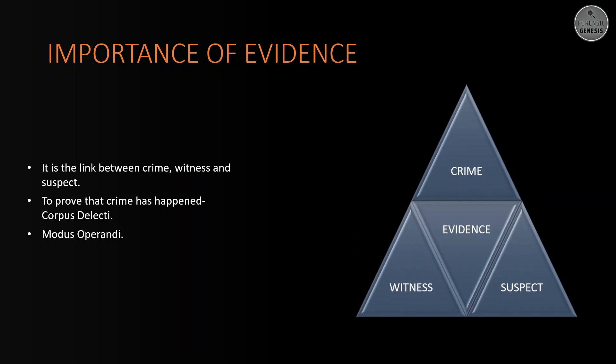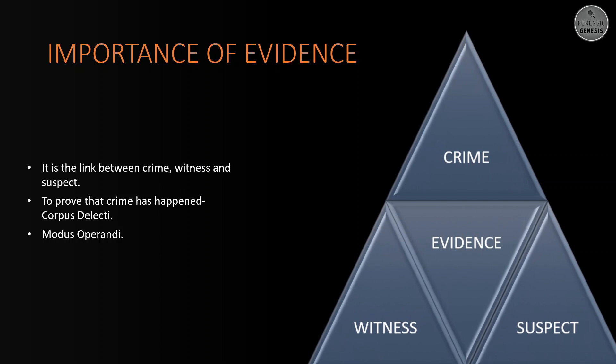Let me explain this with an example. A rape case happened — person A raped person B, murdered him or her at the spot and destroyed the body. Person C saw person A in the act of rape. During the investigation, person C gave a statement as witness. But the murder charges can only be applicable if, condition 1, evidence like the murder weapon, body, etc. of person B is found, or condition 2, if person A confesses that he or she murdered person B. This proves all three points: link between crime, witness and suspect, corpus delicti, and modus operandi.